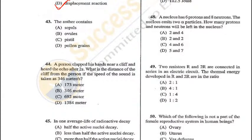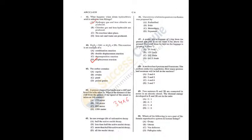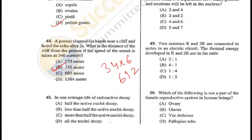Question 44: A person clapped his hands near a cliff and heard the echo after 2 seconds. Speed of sound = 346 m/s. Distance = V × T = 346 × 2 = 692 m. Since sound travels twice the distance between the person and cliff, distance = 692 ÷ 2 = 346 meters — B is the correct answer. Question 45: In one average life, radioactivity decays by 63.2% of its original amount — C is the correct answer.